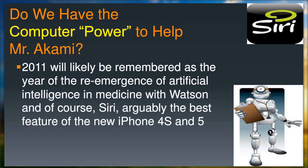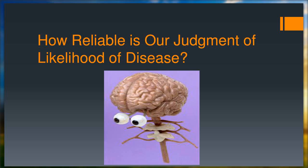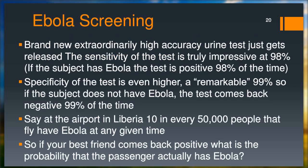Do we have the computational power to help out Mr. Akamai? 2011 may be remembered as the year of reemergence of artificial intelligence in medicine. The Jeopardy match played by the IBM team and the emergence of Siri started sparking our imagination about the potential of very massive computational resources. One question is: how reliable is our human judgment in the likelihood of disease? Here's an example I use to teach residents and medical students about Bayesian reasoning. Imagine a brand new, extraordinarily highly sensitive test — 98% sensitivity and 99% specificity — for Ebola.